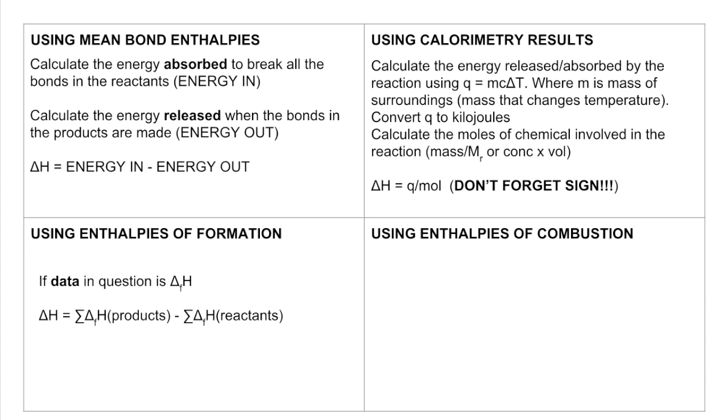And I've got this silly way to remember it. If you're using enthalpies of formation, it's products minus reactants. So F for formation, P for products, R for reactants.